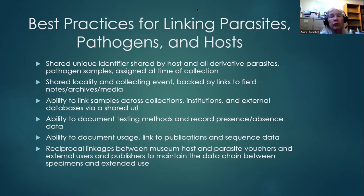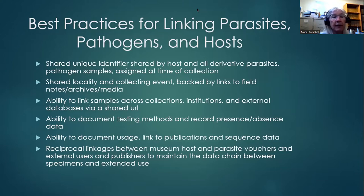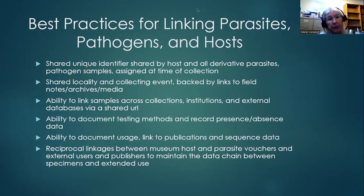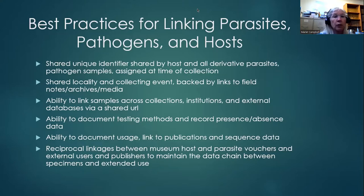Going through a Christmas wish list here — as a community, the natural history community, there are a lot of things we still don't have the ability to do. We need the ability to link samples across collections, institutions, and external databases, ideally via a shared URL that you can plug directly in and land on someone else's page with the data you're looking for. In the absence of a URL, there needs to be a standardized identifier, but identifiers have a tendency to diverge. URLs are unique and very useful for that reason.